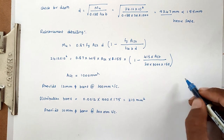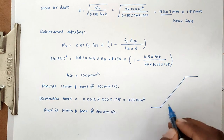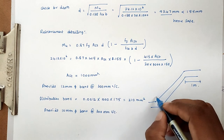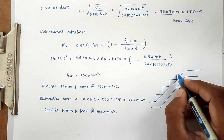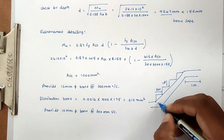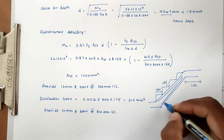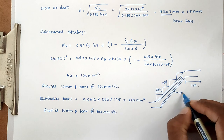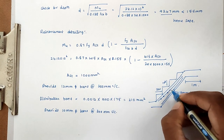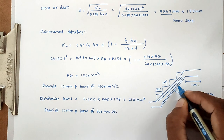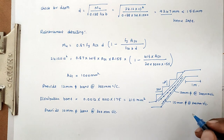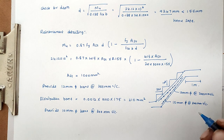We draw the reinforcement detailing diagram. The landing is 1 meter. The tread is 250mm and rise is 150mm. The waist slab has main bars of 12mm dia at 200mm c/c and distribution bars of 10mm dia at 300mm c/c. This is the method to design the dog-legged staircase. Thank you, we will see the next video.